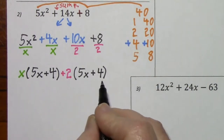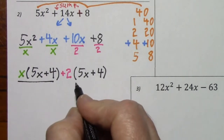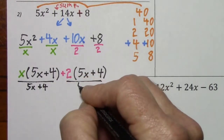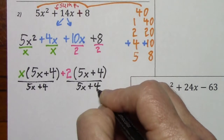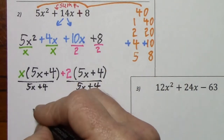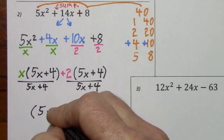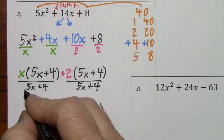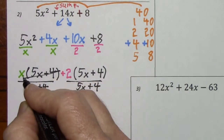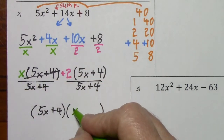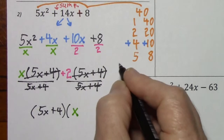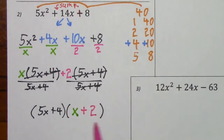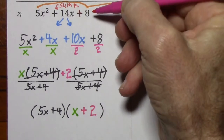Notice what's in parentheses again is identical, so that's what we're going to factor out. We'll put 5x plus 4 in front of parentheses. Working over here, divide out 5x plus 4, you're left with x. And dividing out 5x plus 4, you're left with plus 2. So here's the factored form of our original polynomial.